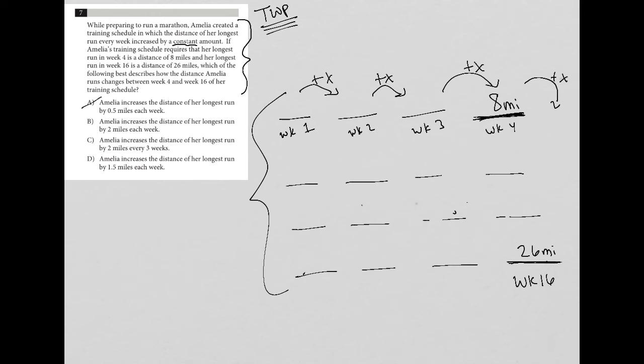Choice B says Amelia increases the distance of her longest run by 2 miles. Well, let's check that out. So this becomes 10, 12, 14, 16, 18, 20, 22, 24. That's going to be too much, right? Because we already hit 26 right here. So that means choice B is out.